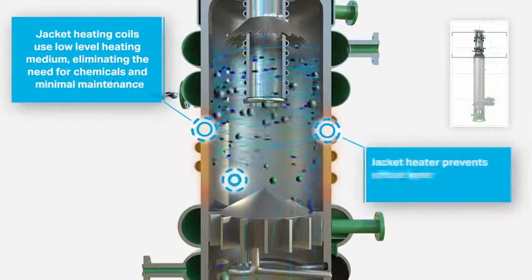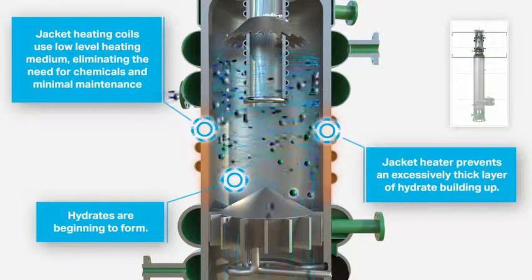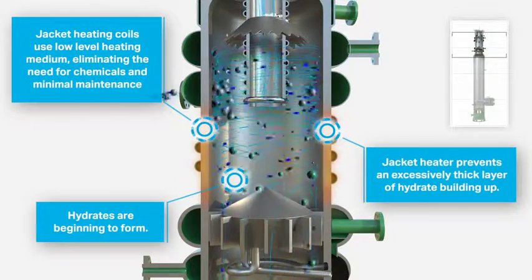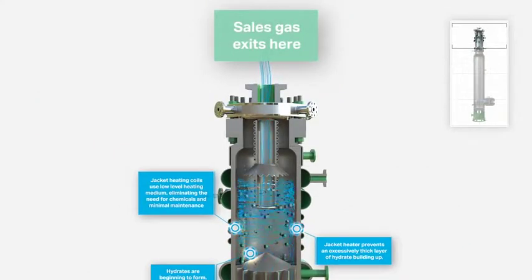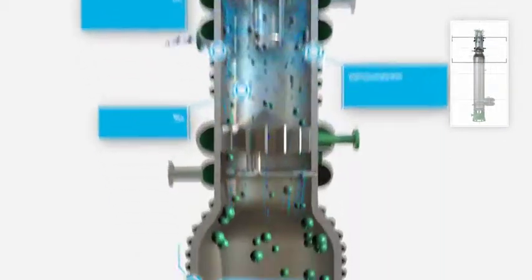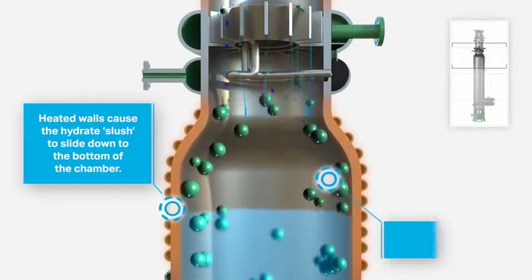Hydrates are managed by heating coils. This eliminates the need for chemicals as part of the process. The gas is later combined with the sales gas of the Twister supersonic separator, whilst the water and condensates move past the deflector head into the liquid compartment of the vessel.